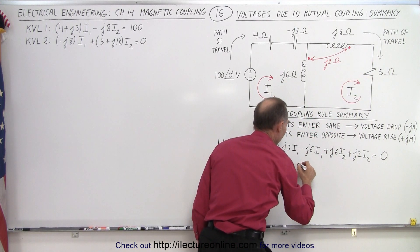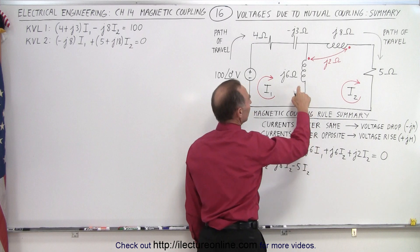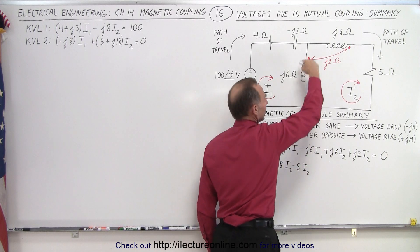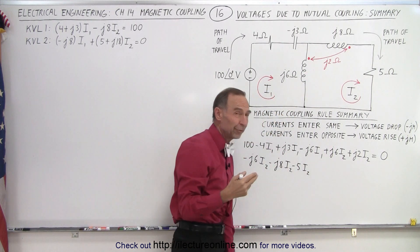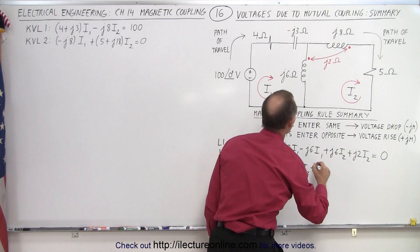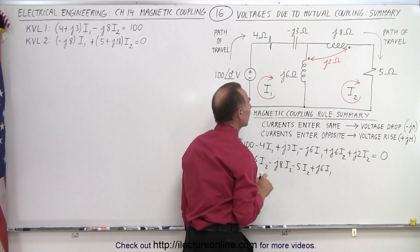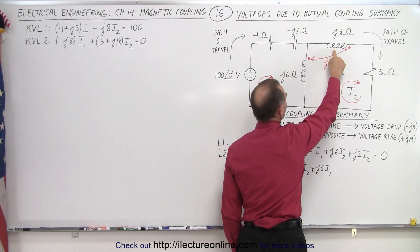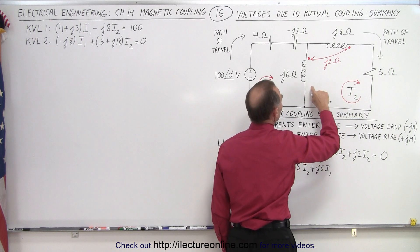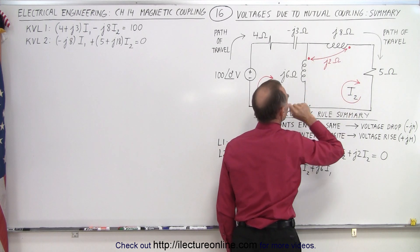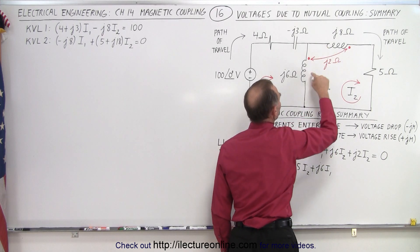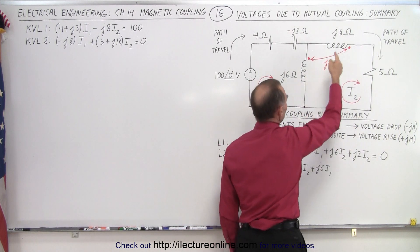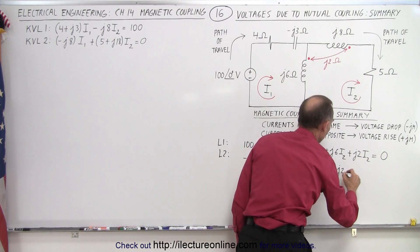Then across the resistor — again a voltage drop because I travel in the same direction as the current — so that's minus 5 times I2. Then I have to account for the current I1 going through this inductor. I travel across it in the clockwise direction, but current I1 is in the opposite direction, so that gives a voltage rise: plus j6 times I1. Now for the coupling: I1 goes through this inductor and it's coupled with the other inductor. Both I2 instances enter on the opposite side of the dot — same direction — so that's a voltage drop: minus j2 times I2.